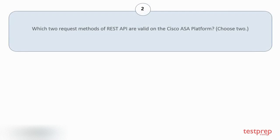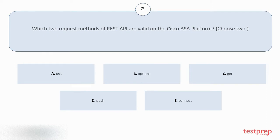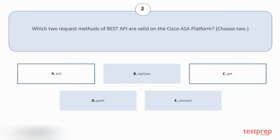Question number 2. Which two request methods of REST API are valid on the Cisco ASA platform? Choose 2. Your options are: A. Put. B. Options. C. Get. D. Push. E. Connect. The correct answers are option A and C.